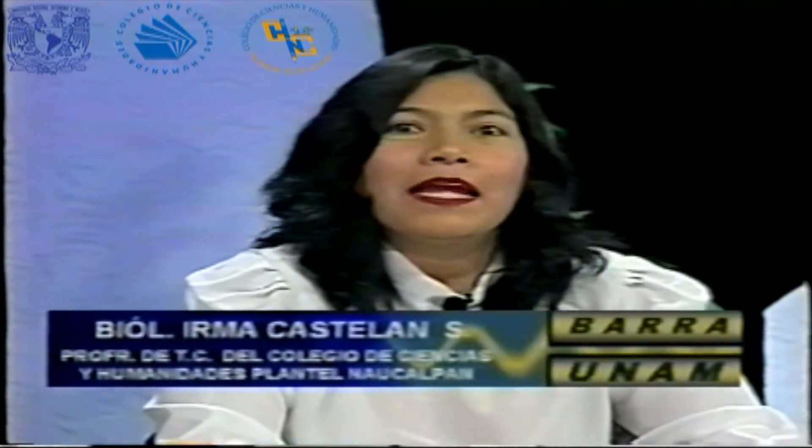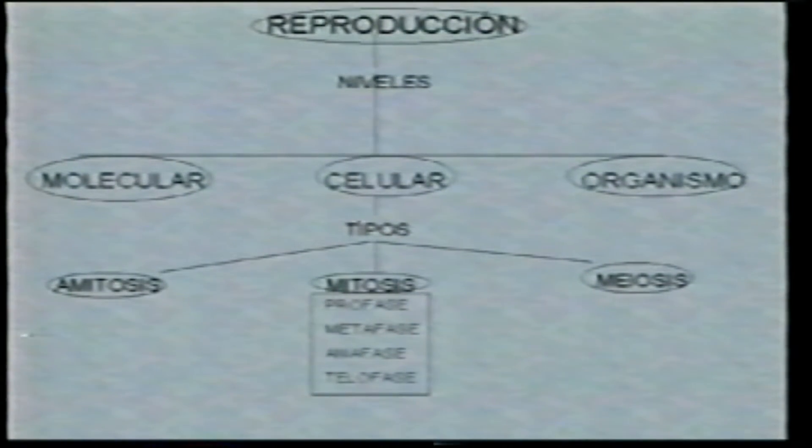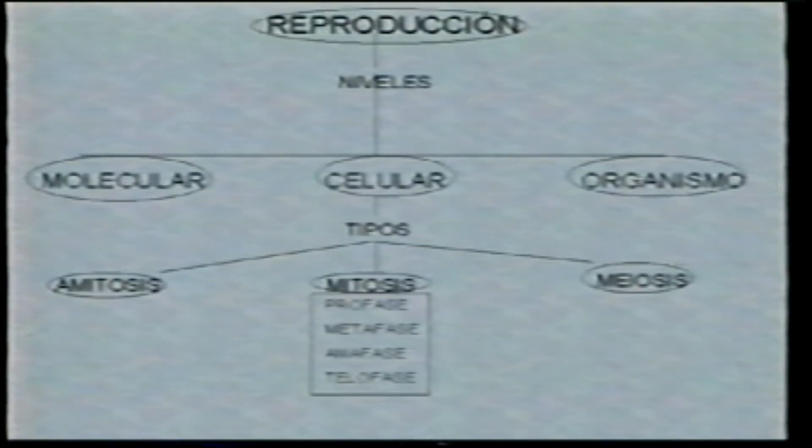Todos los seres vivos estamos formados por células. Voy a hablar de la reproducción celular y específicamente de la que se llama mitosis. La reproducción va a incluir tres niveles: el nivel molecular, el nivel celular y el nivel de organismo. En el nivel celular se incluyen tres tipos de reproducción: la amitosis, la mitosis, de la que vamos a hablar ahora, y la meiosis.